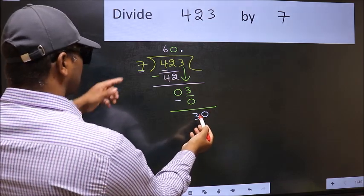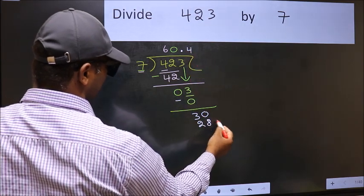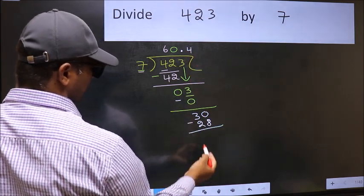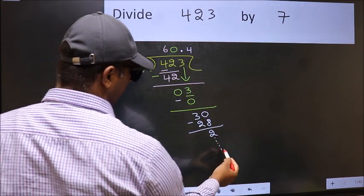A number close to 30 in 7 table is 7 fours 28. Now you subtract 30 minus 28, 2, and continue the division. I am not doing that.